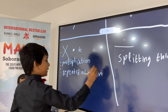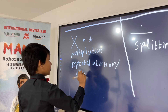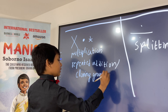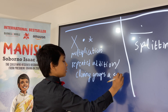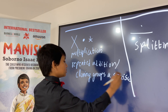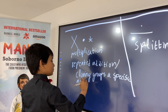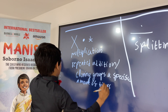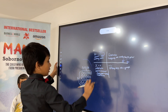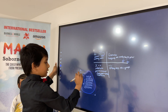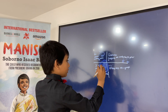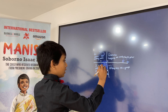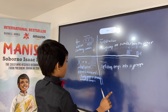Five times four is twenty. So it's repeated addition. Now let's size down our demonstration a little bit. Perfect.